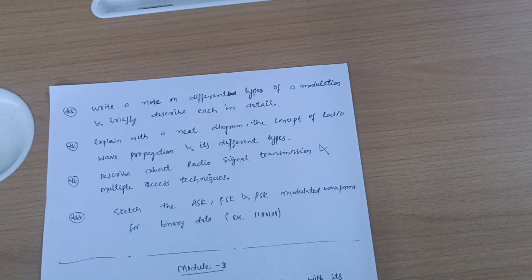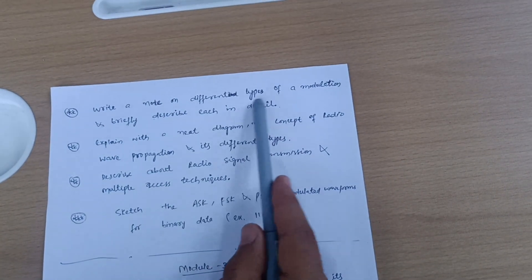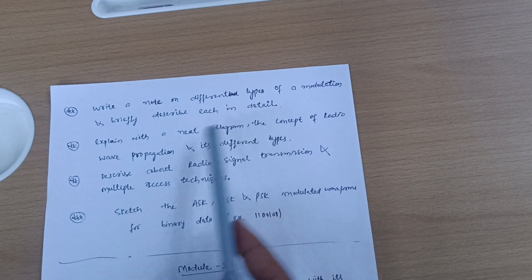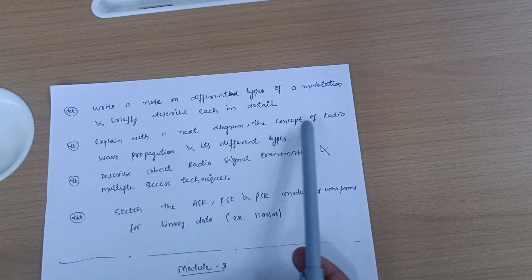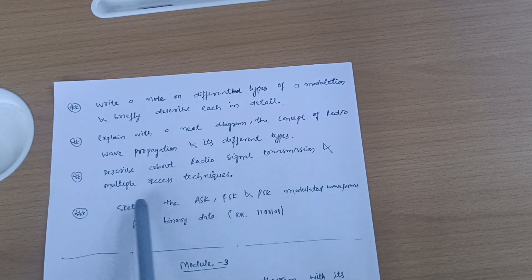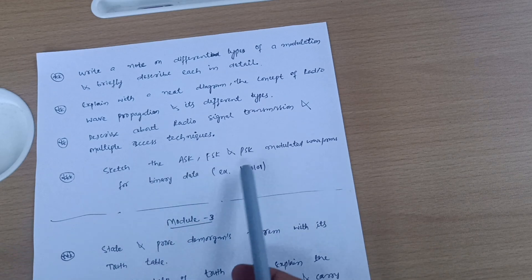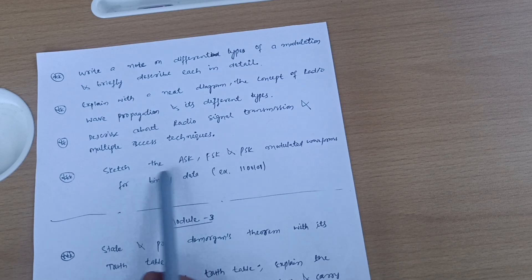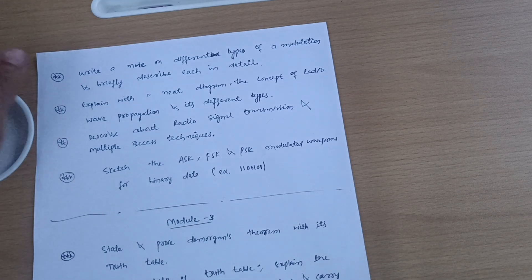Four possible questions are: write a note on different types of modulation and briefly describe each in detail; explain with neat diagram the concept of radio wave propagation and its different types; describe radio signal transmission and multiple access techniques; and sketch the ASK, FSK, and PSK modulated waveform for binary data.